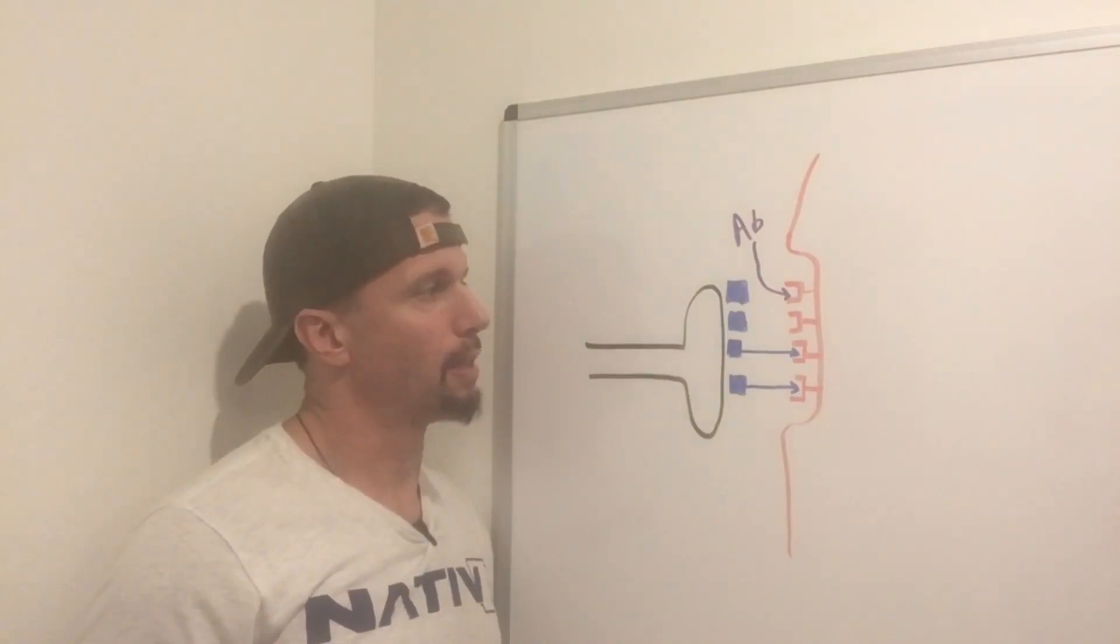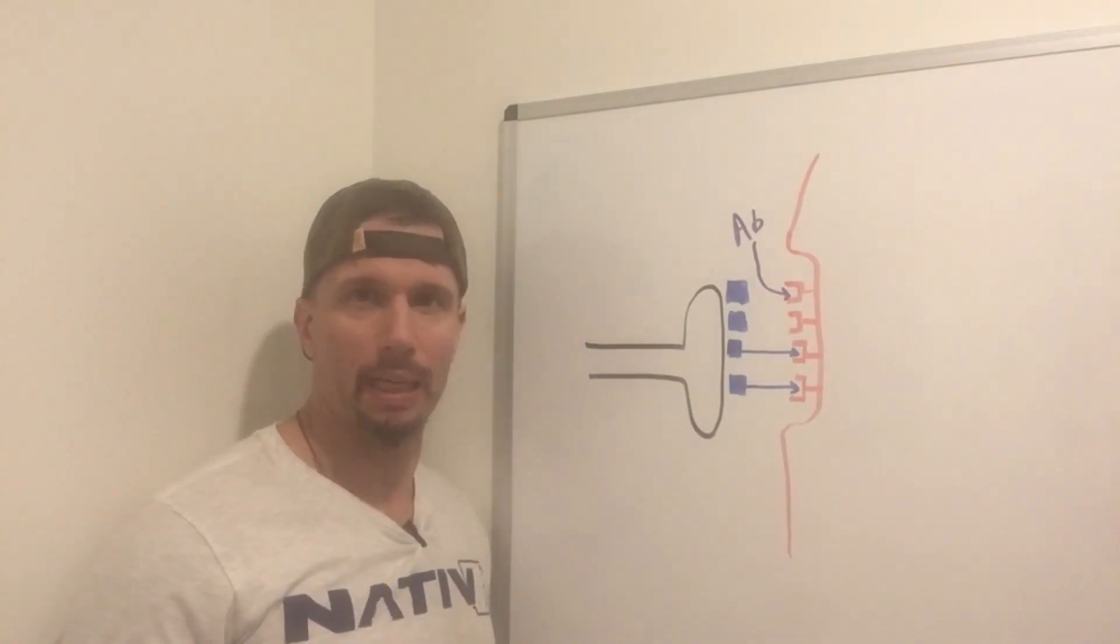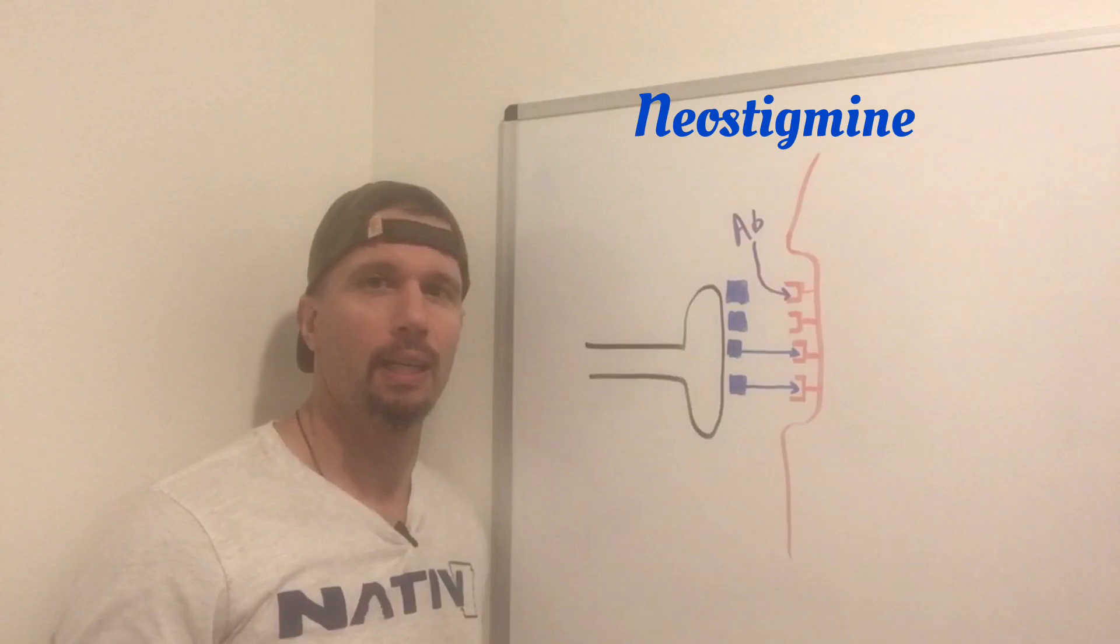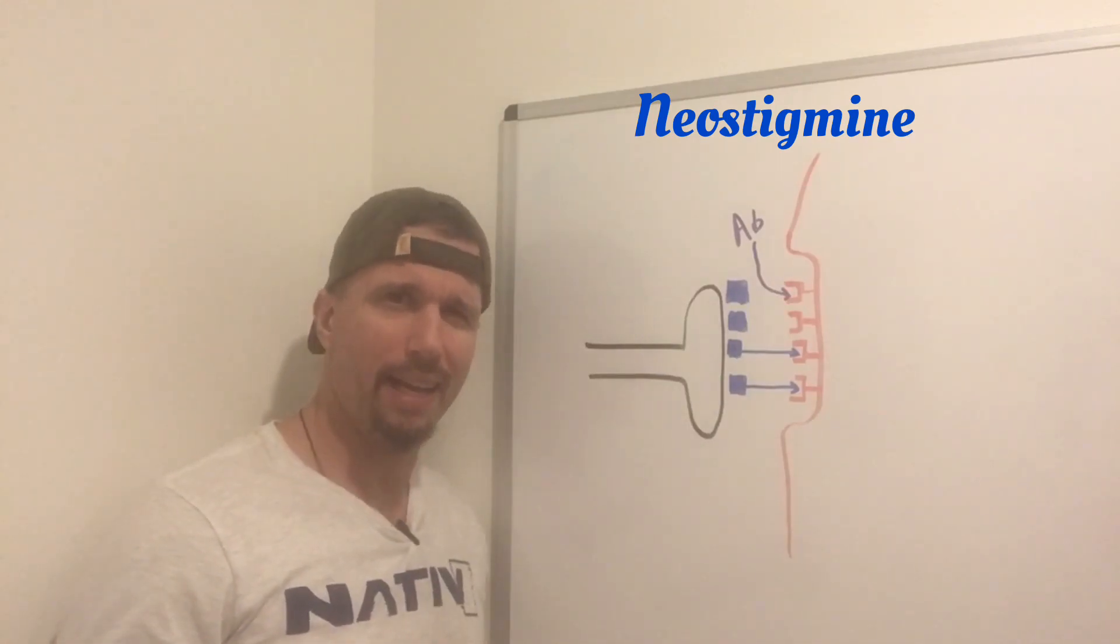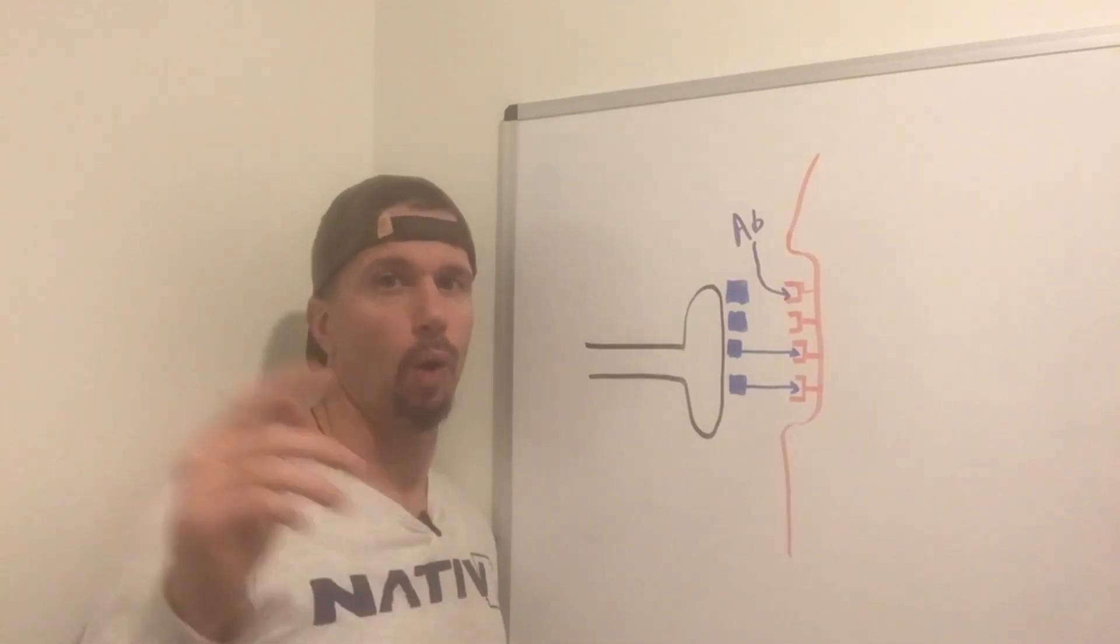The way they treat myasthenia gravis is they prescribe something like neostigmine. That suffix 'stigmine' is typically an acetylcholine esterase inhibitor.